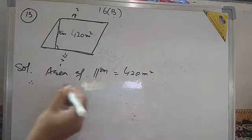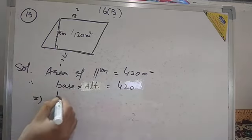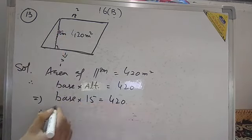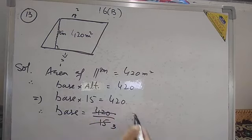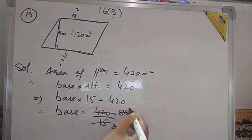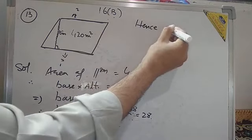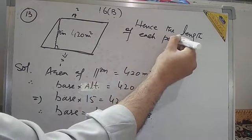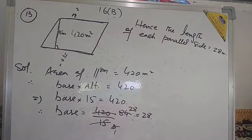In the solution: area of parallelogram equals base into altitude equals 420. Base into 15 equals 420. Therefore, base equals 420 divided by 15, which gives 28. Hence, the length of each parallel side is equal to 28 meters.